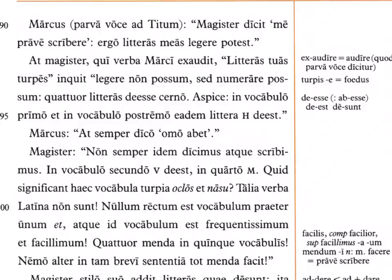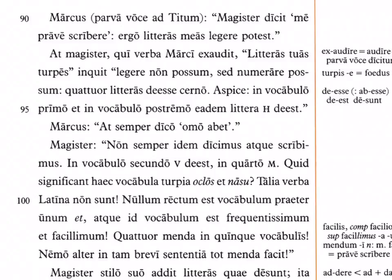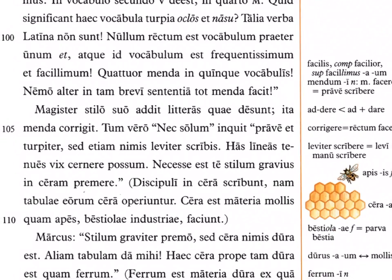In the fourth word the M is missing. 'Quid significant haec vocabula turpia oclos et nasu?' — what do these ugly words 'oclos' and 'nasu' signify? 'Talia verba Latina non sunt' — such words are not Latin. 'Nullum rectum est vocabulum praeter unum et' — no word is correct except for 'et.' 'Quattuor menda in quinque vocabulis' — four errors in five words. 'Mendum' means error, which is where we get 'emend' from.